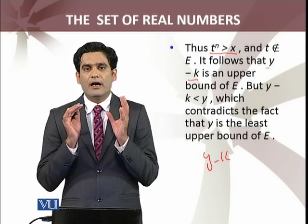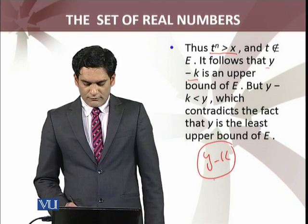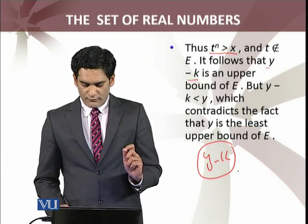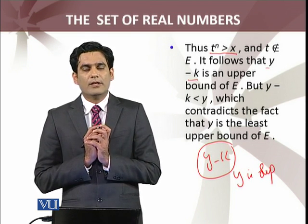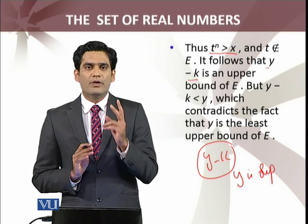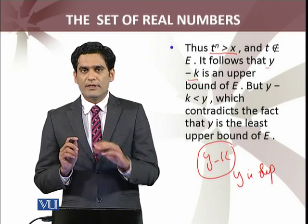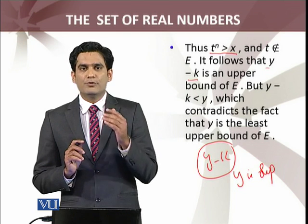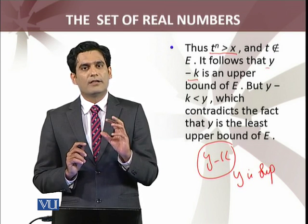By previous expressions, y - k becomes an upper bound of the set E. But can y - k be an upper bound of set E when y is the supremum? This is impossible. Hence we reached a contradiction. The two cases I discussed: y^n < x led to a contradiction, and y^n > x also led to a contradiction.